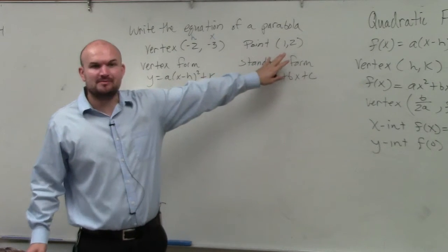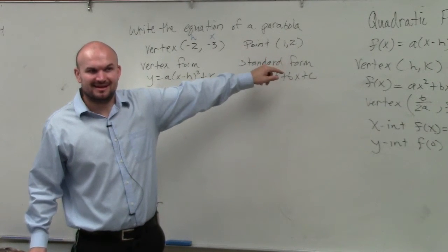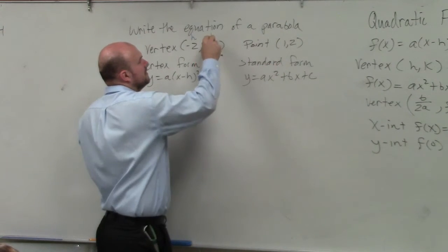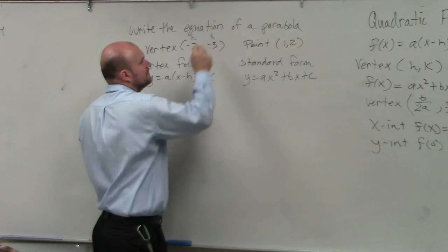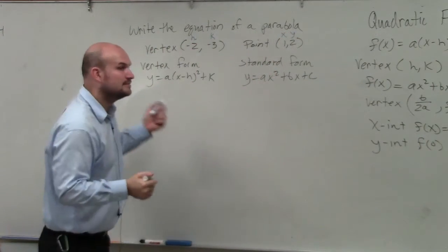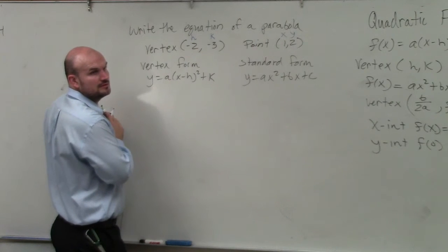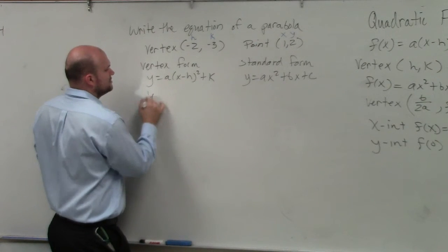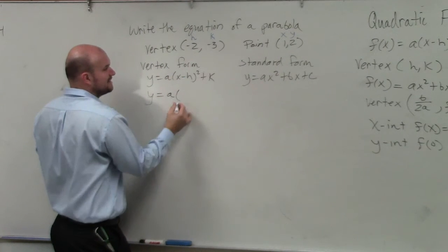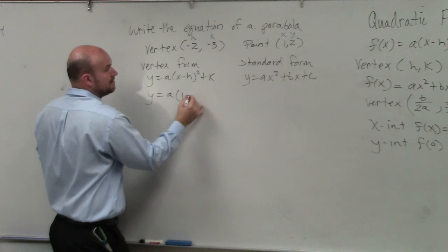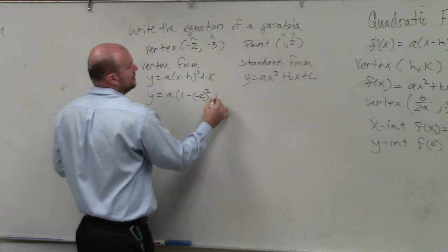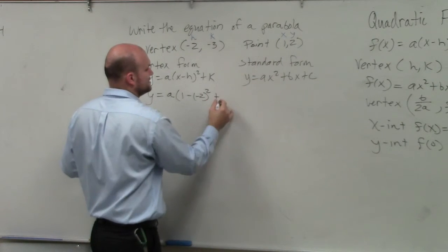What should 1 comma 2 represent? That should represent an x and a y. So y equals — we still don't know a — x, we can say, is 1 minus h, which is negative 2, squared, plus k, which is negative 3.